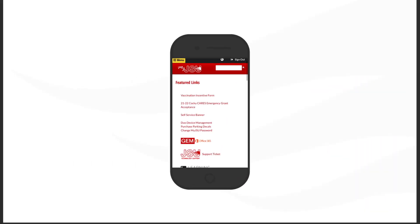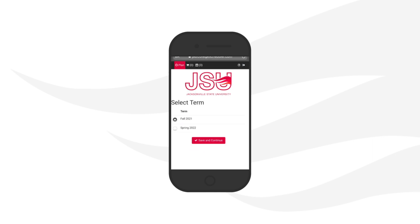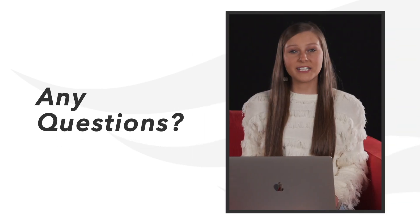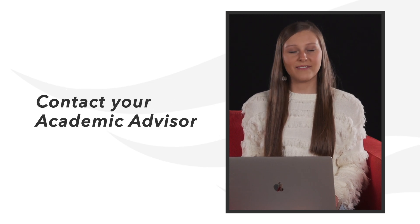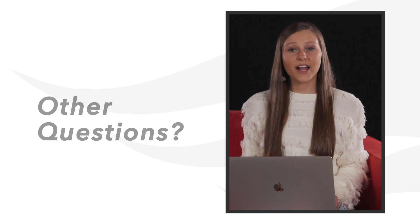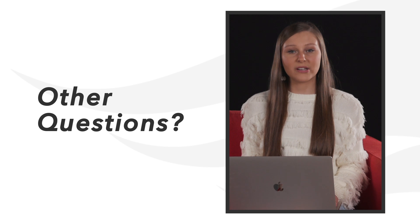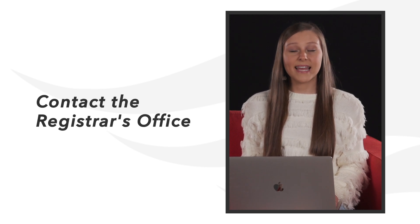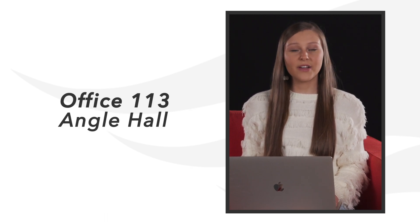Registration can also be accessed and is fully functional on any smartphone. If you have any questions about your courses or your alternate pin, please contact your academic advisor. For other questions about the registration process, please contact the registrar's office. They can be reached by phone at 256-782-5400, in person in office 113 Angel Hall, or by emailing registrar@jsu.edu.